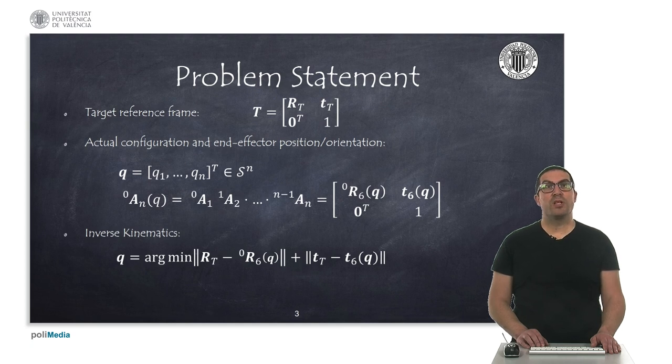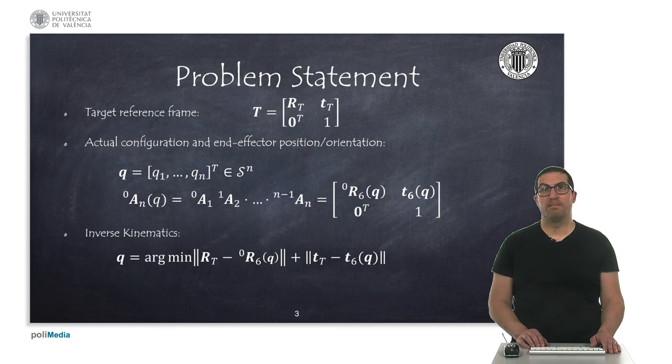The inverse kinematic problem consists of providing the values of joint positions given a target reference frame, usually provided as a homogeneous transformation matrix T. Obviously, we will assume that we know the constructive parameters of the robot that will allow us to compute the end effector position and orientation, so that the problem is reduced to find the values for Q such that the end effector position and orientation are the same as the target ones.